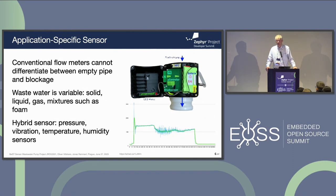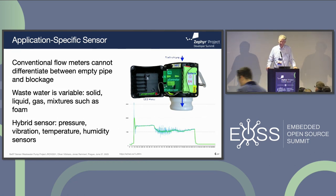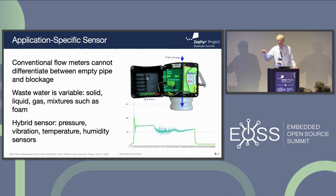In order to detect the flow, we built a hybrid sensor system with pressure, vibration, temperature, and humidity sensors, which all work together. On the diagram, you can see the pressure sensor and the flow of the water over time.